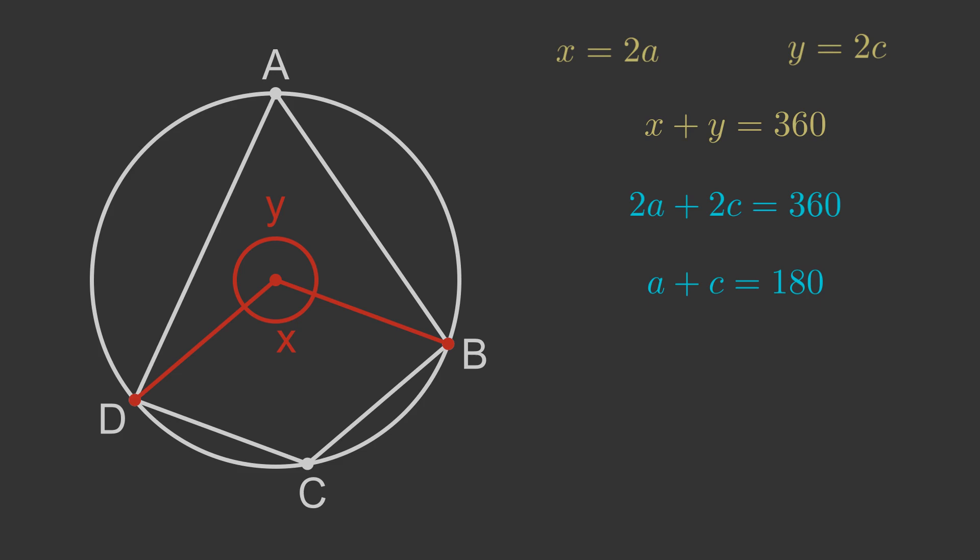We now need to prove the same thing for angles B and D. We know that the internal angles in the quadrilateral add up to 360, so A plus B plus C plus D equals 360. Since A plus C equals 180, we can write this as B plus D plus 180 equals 360. Subtracting 180 from both sides gives B plus D equals 180. So opposite angles A and C add up to 180, and opposite angles B and D add up to 180, which is what we set out to prove.